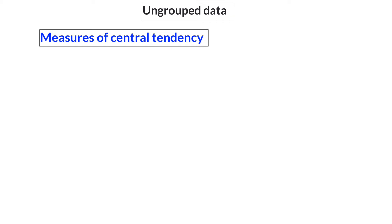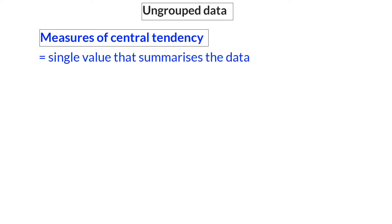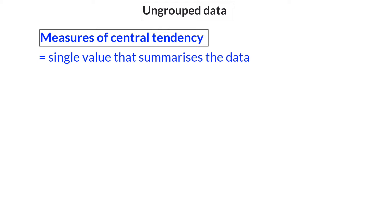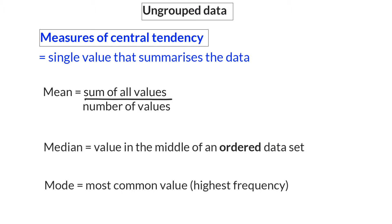Ungrouped data is when you receive the raw data values. Measures of central tendency are calculations that result in a single value that summarizes the data, giving you the average tendencies of the data set. These measures are the mean, the median, and the mode.